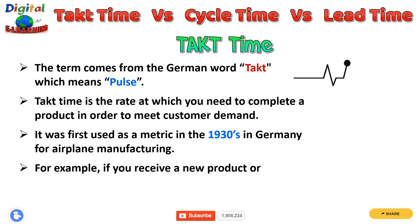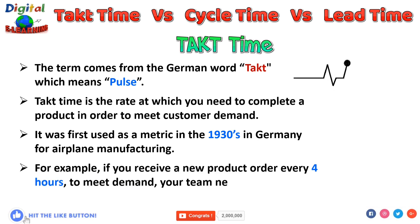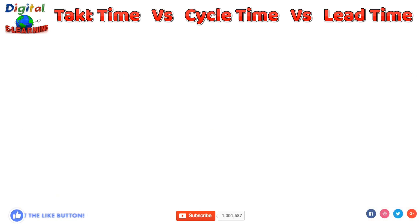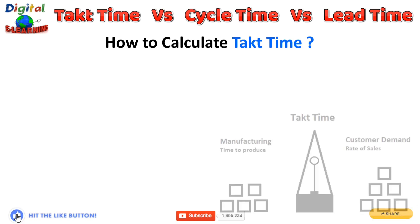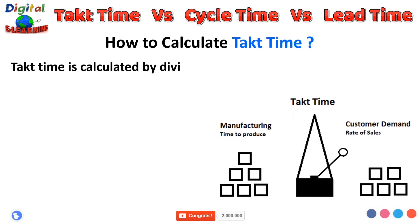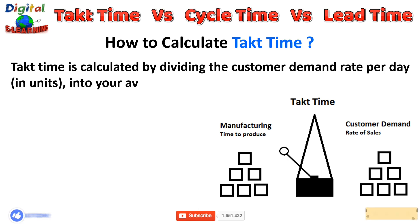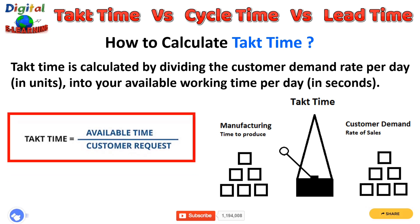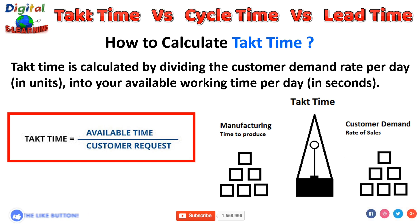For example, if you receive a new product order every 4 hours, your team needs to finish their product in less than 4 hours to meet this demand. Takt time is calculated by dividing the available working time per day by the customer demand rate per day in units. The available time excludes break time and any expected stoppage time, such as scheduled maintenance or team briefings.